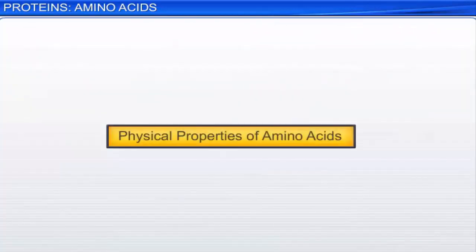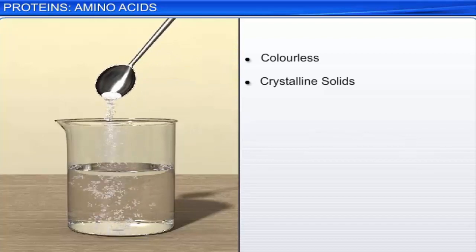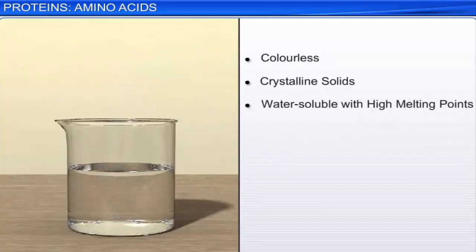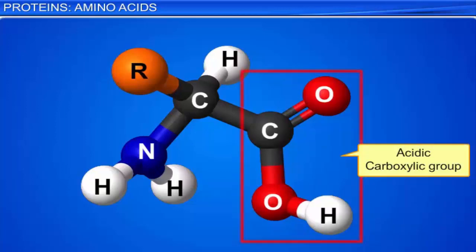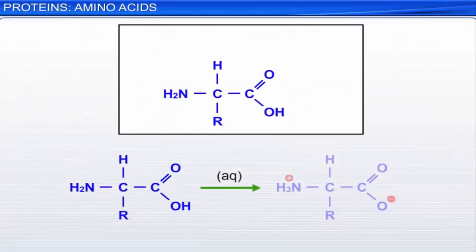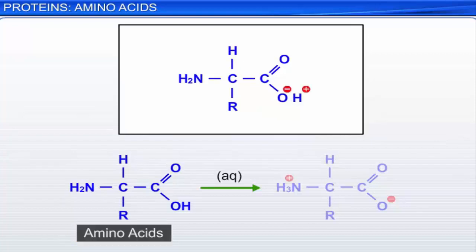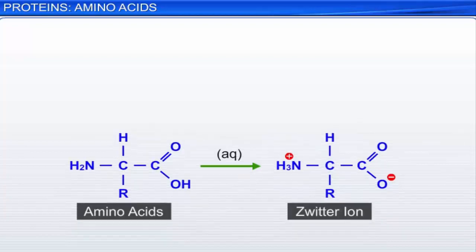In general, amino acids in their pure states are colorless crystalline solids. They are water soluble with high melting points. Most amino acids behave like salts rather than like simple amines or simple carboxylic acids. Their behavior like salts is attributed to the presence of both the acidic carboxylic group and basic amino group in the same molecule. In aqueous solutions, the acidic carboxylic group of an amino acid transfers a proton or hydrogen ion to the basic amino group present in the same molecule, resulting in the formation of a dipolar ion called a zwitterion. Thus, amino acids form zwitterions in aqueous solutions. Zwitterions are electrically neutral and exhibit amphoteric behavior, as they can react with both acids and bases.